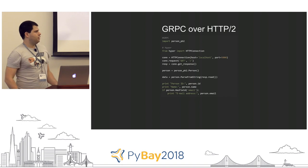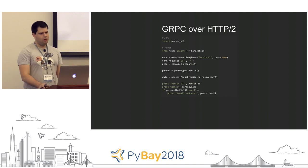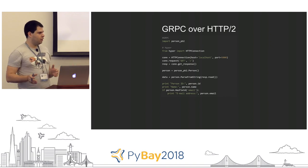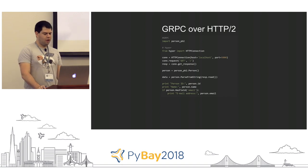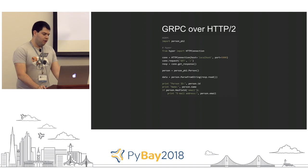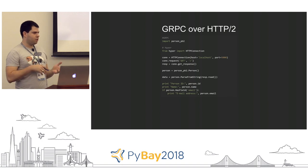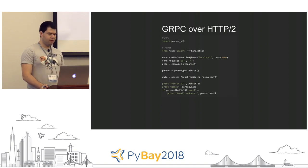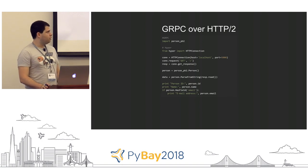On the client side when receiving, we need to use a library called Hyper. You may be familiar with Requests already in Python — Hyper is basically the same, and it's pretty much the only library right now that supports HTTP/2 connections. We would just create our Hyper HTTP connection, do a GET request, get the response, and then call parseFromString to decode the message. There's also a special function you can use to check if an optional field exists and read it only if it does.